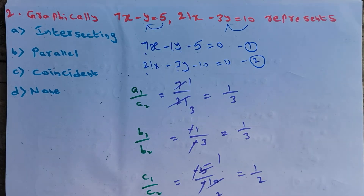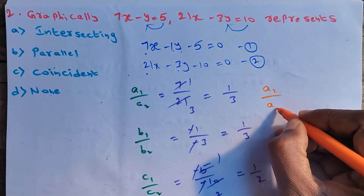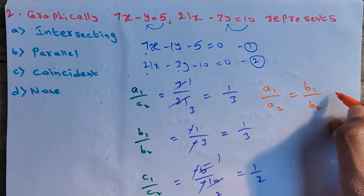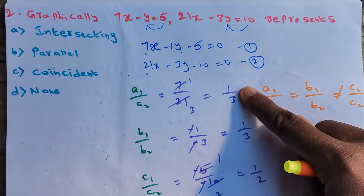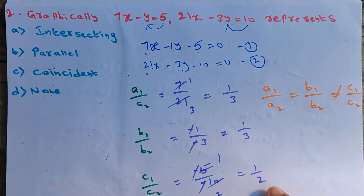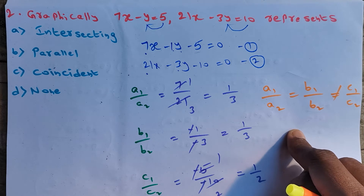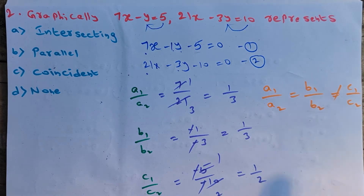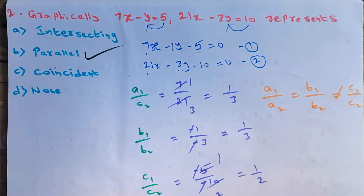From these three ratios we conclude: a1/a2 = b1/b2 ≠ c1/c2. This condition corresponds to parallel lines. So option B is the correct option.